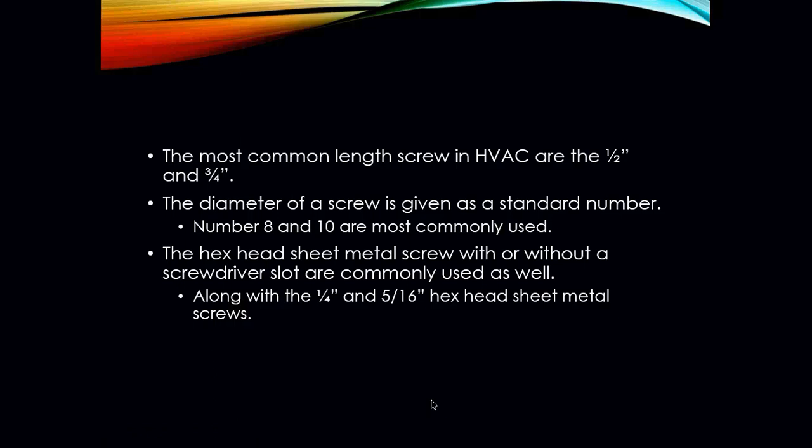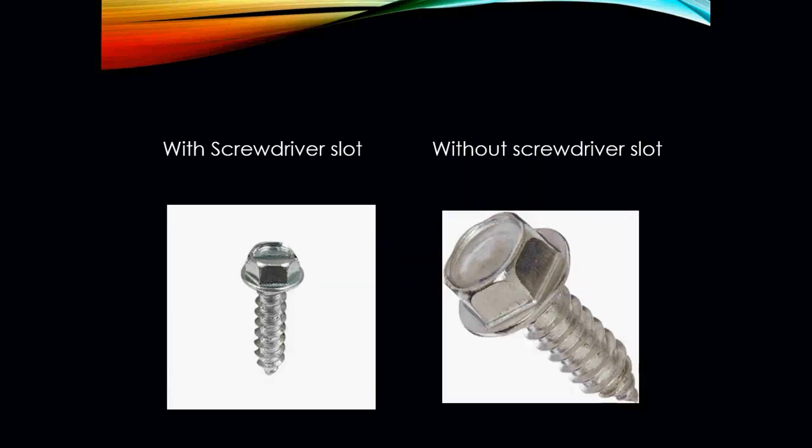The most common screw in HVAC is going to be your half-inch or three-quarter-inch HVAC screw. The diameter of the screw is given as a standard number, such as number 8 or number 10. The hex head sheet metal screw can come with or without a screwdriver slot, and those are commonly found along with your quarter and five-sixteenths hex head sheet metal screws. You can have your sheet metal screw with a screwdriver slot or without — both are relatively common in the field.